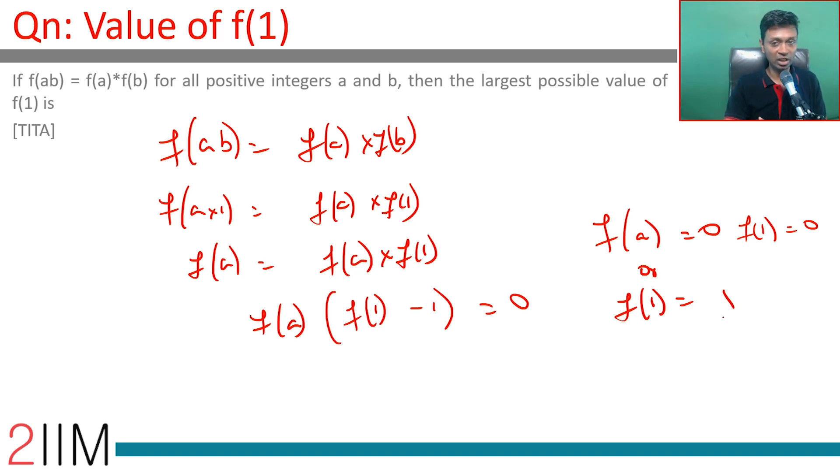In which case there are different values possible, but f of 1 is 1, that much we know. The largest possible value of f of 1 is 1. When f of 1 could either be 1 or it could be 0 if the constant function f of a equals 0, then f of 1 will also be 0. If that is not the case, then f of 1 is 1. The largest possible value of f of 1 is 1.